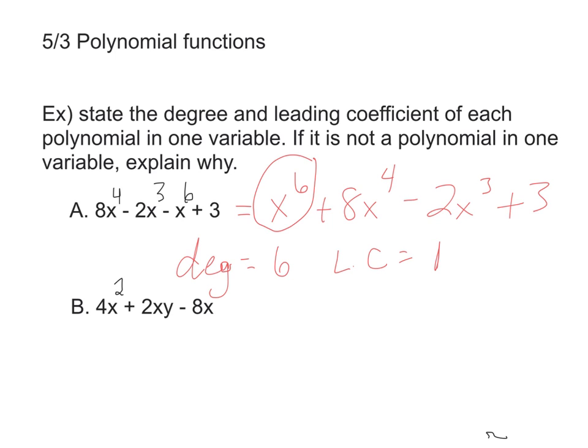If we look at the next example, example two, it's 4x squared plus 2xy minus 8x. This is where the polynomial one variable comes into effect, because this one has a y in it, so this one is not a polynomial in one variable.